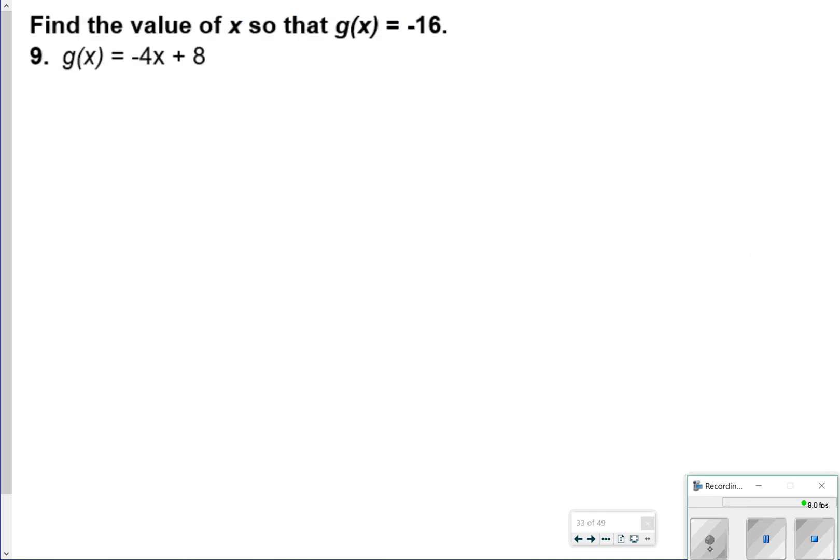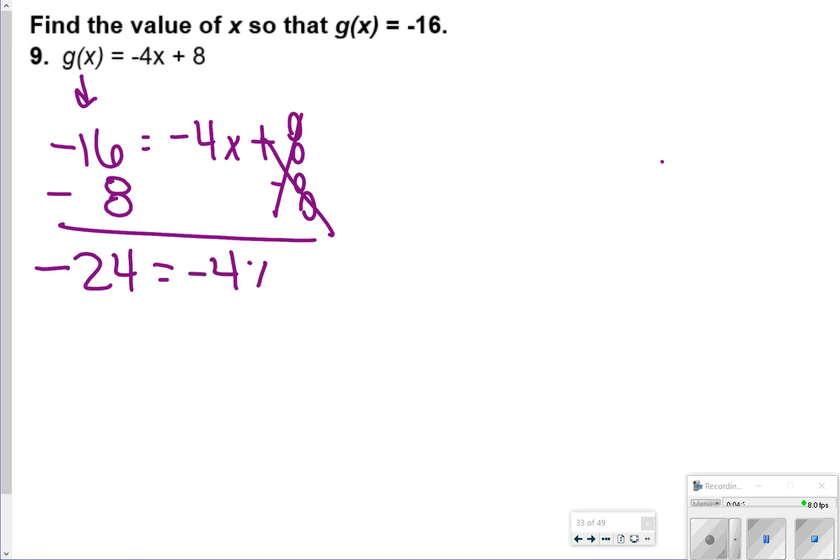For number 9, it says find the value of x so that g of x is equal to negative 16. So what we're going to do is just plug in negative 16 where g of x is, and then solve for x. So the first thing I'm going to do is subtract 8 from both sides. These two 8's cancel out. Negative 16 and a negative 8, that is going to give me a negative 24. So I have negative 24 is equal to negative 4x. And then I'm just going to divide both sides by negative 4 so that x is equal to 6.